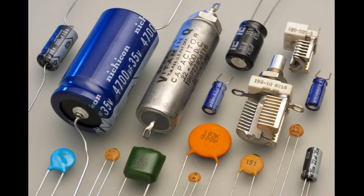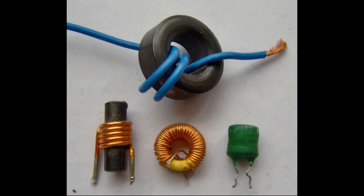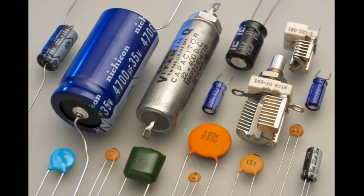This property is called inductive reactance in the case of inductors and capacitive reactance in the case of capacitors. If we have an inductor of inductance L, its reactance will be given by 2π times the frequency times the inductance.